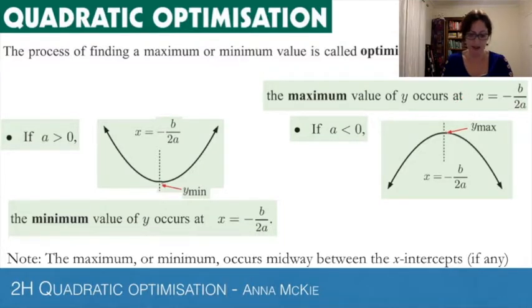Another point of interest: the max or min occur midway between the x-intercepts if there are any. That'll always be the case, so that's handy to know.